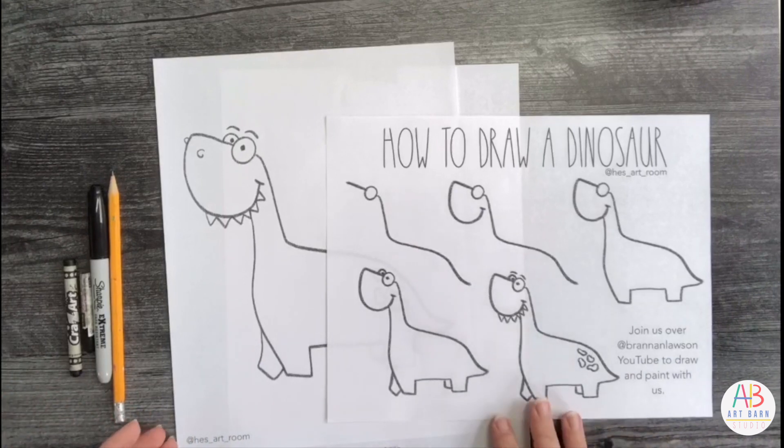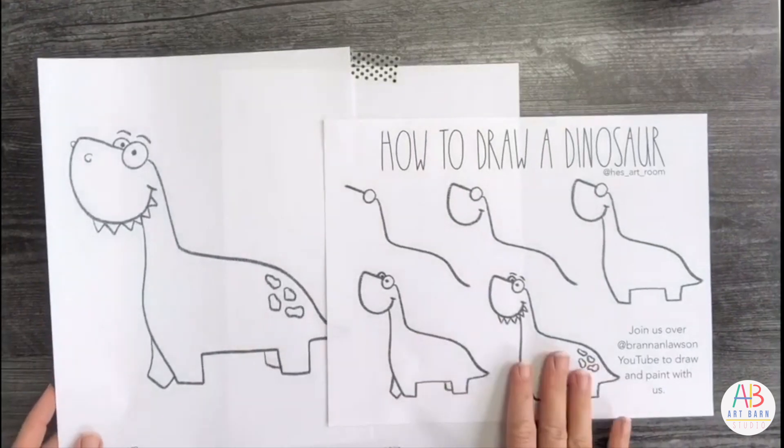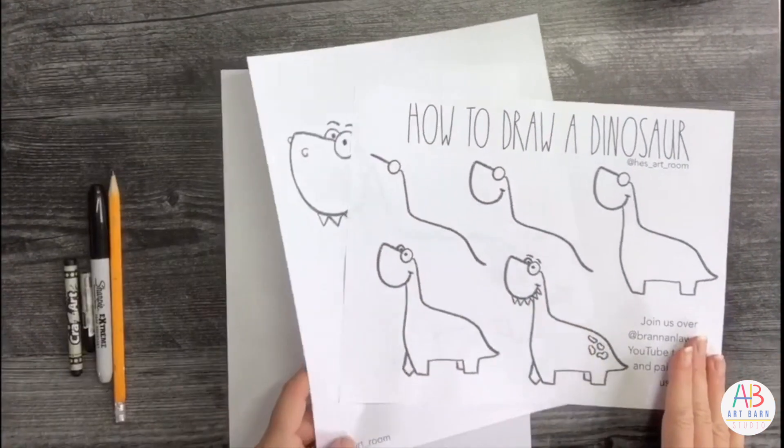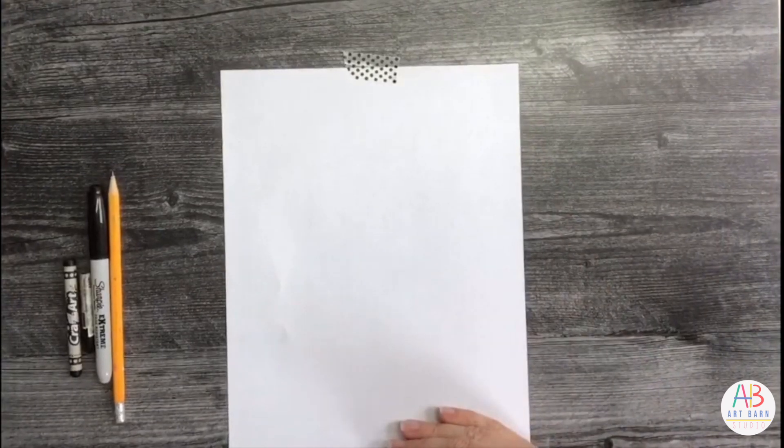There are your two sheets that will be linked: the coloring sheet and your how to draw dinosaur. We are starting with our paper vertical and what we're going to do today, we are going to make the invisible line.